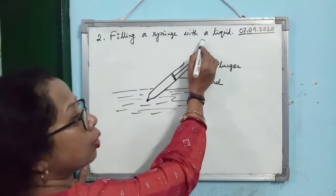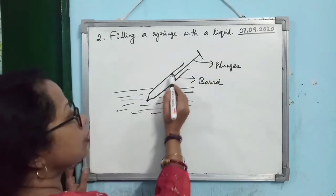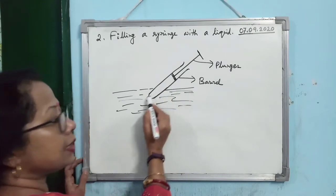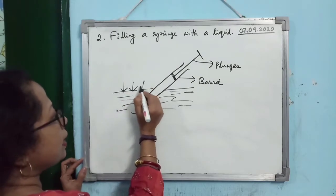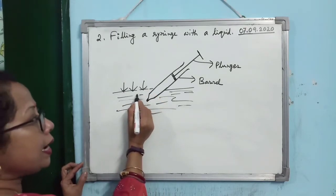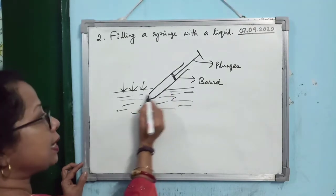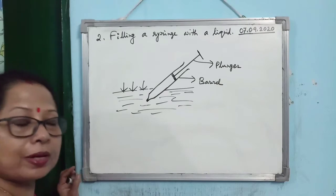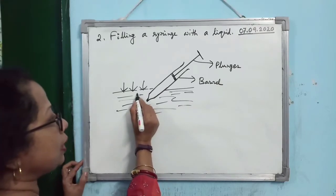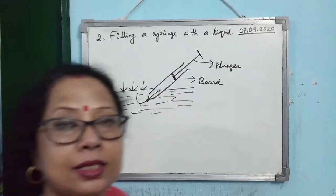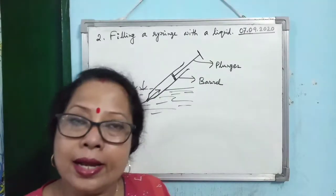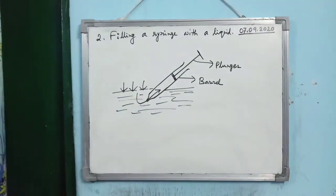Then pull the plunger out. A low pressure region is created inside the barrel. Outside, atmospheric pressure is higher. So the liquid enters from the high pressure region to the low pressure region and fills up the barrel. This is how atmospheric pressure is used to fill a syringe with liquid.